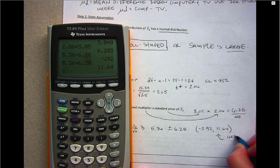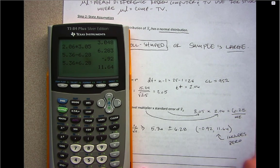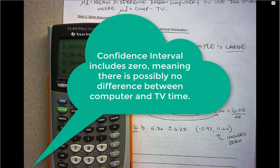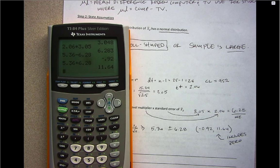Because this interval includes 0—meaning it ranges from negative to positive—normally I wouldn't interpret it because it sounds odd. When 0 is included, it indicates there's possibly no difference between the two measurements, so interpreting the confidence interval doesn't typically make sense. But for the sake of practicing interpretation, we're going to interpret this.